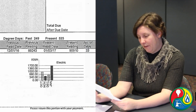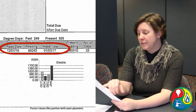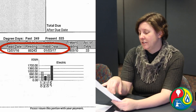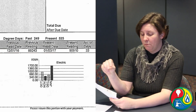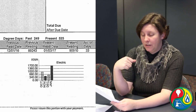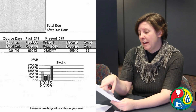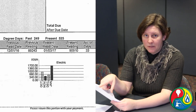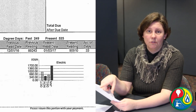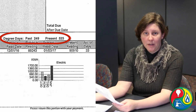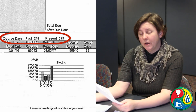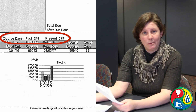Now if we jump ahead to the next month, it also has a read date of the first, but because of the holiday, it has a total number of days of 33 — actually three days more than the previous bill. And if you look at the degree day information on this particular bill, it shows degree days of 525. So in this particular bill, we had three extra days, but we also had more extreme weather.